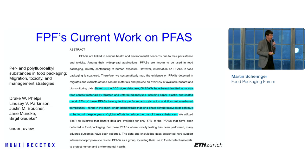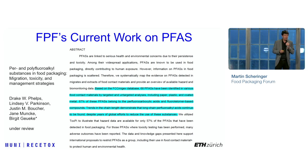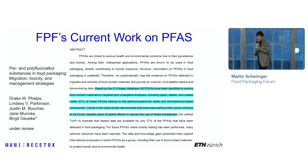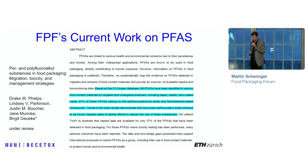FPF is also working on PFAS. This is from a paper just submitted or under review. The team used the FCCmigex database — a database of chemicals found in food contact materials confirmed to migrate out of these materials. The paper states that 68 PFAS have been identified in various food contact materials by targeted and untargeted analysis, including paper, plastic, and coated metal. 87% of these PFAS belong to perfluorocarboxylic acids and fluorotelomer-based compounds. Trends in chain length demonstrate that long-chain perfluoroalkyl acids continue to be found despite years of global efforts to reduce the use of these substances.